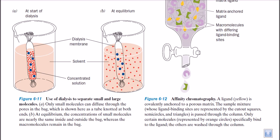These two principles work together. Because of size exclusion, only small molecules can get outside the cellophane bag while larger ones cannot penetrate the small holes. The reason these small molecules move from inside the bag towards the outer solvent is diffusion: the outer solvent has no protein concentration, but inside the bag there is a high protein concentration, so small proteins travel down the concentration gradient via diffusion.